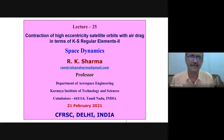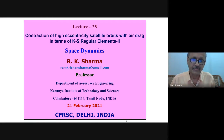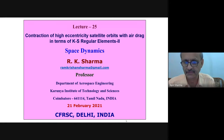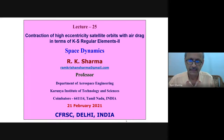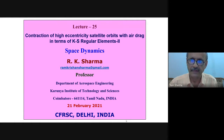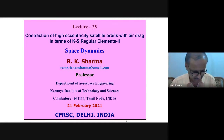Today we have a discussion on the contraction of high eccentric satellite orbits with air drag in terms of KS regular elements. These high eccentricity orbits are quite useful. Their orbit is to be determined with respect to different forces, but drag plays a very important role in their decay, which is mainly controlled by atmospheric drag and the gravity of the Sun and Moon. The Sun does the maximum contribution. We will have a lecture on that later.